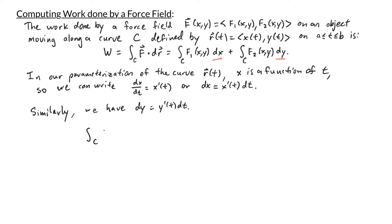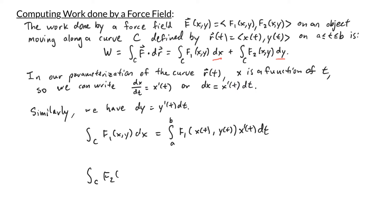To compute the line integral of f1(x,y) dx, we integrate f1 evaluated at x(t), y(t) and replace dx with x prime of t dt, integrating from t equals a to t equals b. Similarly, for the line integral of f2(x,y) dy, we integrate f2 evaluated at x(t), y(t), replace dy with y prime of t dt, again from a to b.